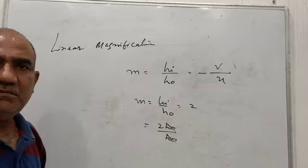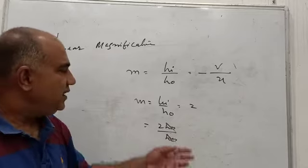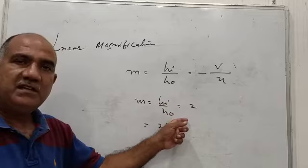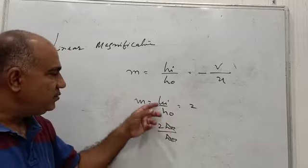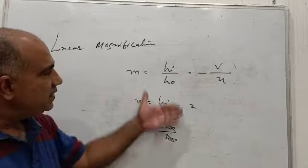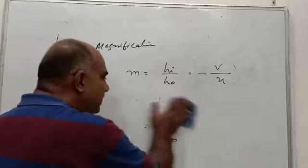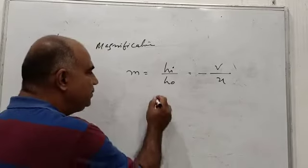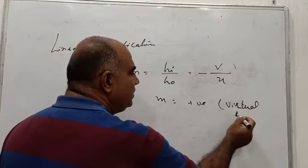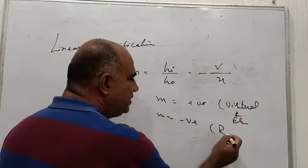This is how it is to be understood. If magnification produced by a mirror is 2, that means the numerator is twice the denominator — so HI equals 2 HO, or the height of image is twice the height of the object. Now, a very important concept: if magnification is positive, the image is virtual and erect. And if magnification is negative, the image is real and inverted.